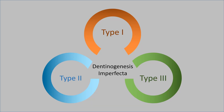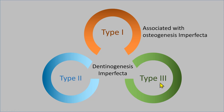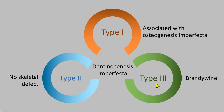Dentinogenesis imperfecta can be three types: type 1, type 2, and type 3. Type 1 is associated with osteogenesis imperfecta. Type 2 has no skeletal defect. Type 3 is very uncommon — a Brandywine type limited to a small group of people in Maryland — so most likely you will not see that.